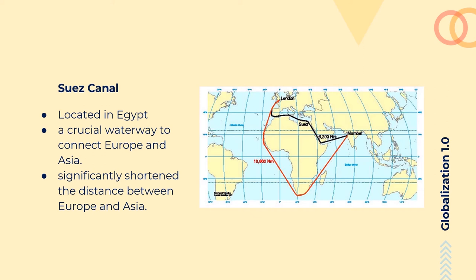According to Baldwin, Globalization 1.0 had almost no international organization. From an economic perspective, global trade grew significantly and the global export rate increased.